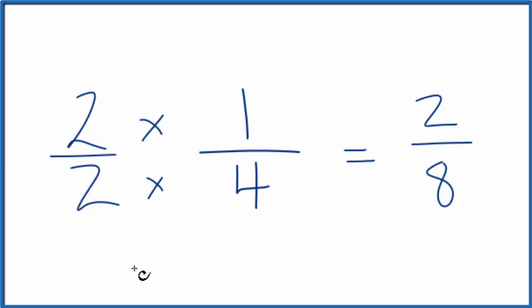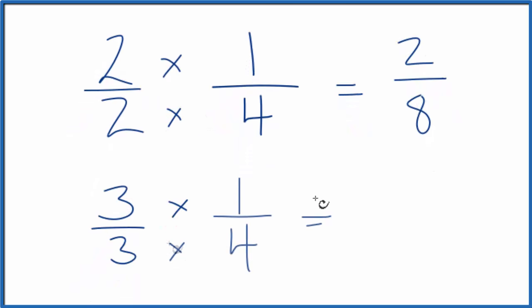Let's do two more. How about three over three? That's still one. And we end up three times one is three. Three times four, that's twelve. Again, this is equal to the same thing as two-eighths or one-fourth. They're equivalent fractions.